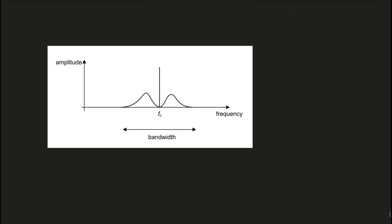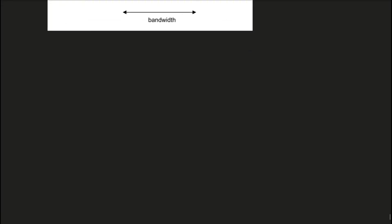This graph shows the same thing but this time the information signal used for amplitude modulation is not of a single frequency but contains a range of different frequencies. You can find the maximum frequency of the information signal from here, and you can also find the bandwidth of the information signal from the widths shown. The entire width gives you the bandwidth, and the center gives you the frequency of the carrier wave.